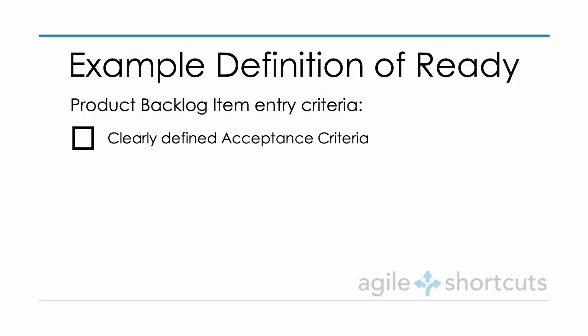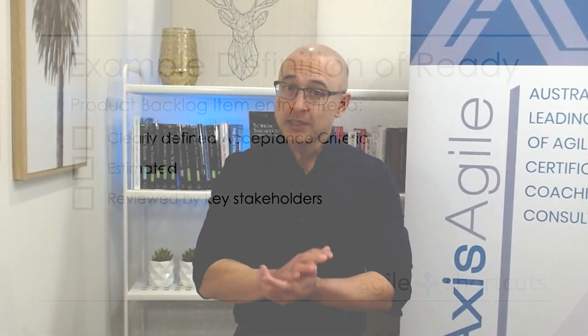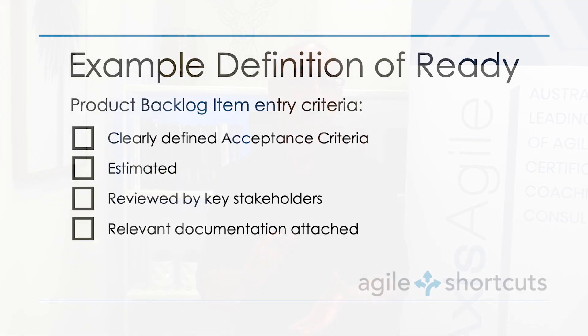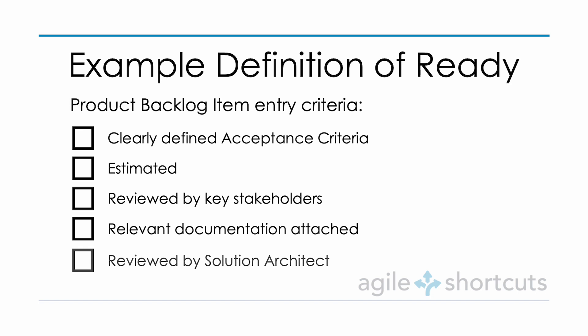The Definition of Ready specifies the quality constraints for what can enter our sprint cycle — specifically our product backlog items. Both the Definition of Done and Definition of Ready are checklists. Examples on this checklist include clearly defined acceptance criteria, work estimated perhaps in story points, socialized with certain stakeholders, additional documentation, and other people who might need to be involved — such as a solution architect to review dependencies and technologies.